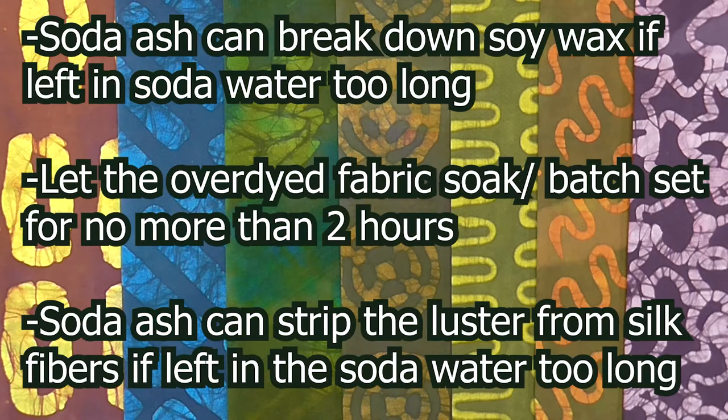Let your over-dyed fabric sit for 1-2 hours. Soda ash breaks down soy wax, so if you leave it in too long you'll negate your wax stamping, but feel free to experiment. If you're dyeing silk with soda ash, you can strip the luster of the fiber if you leave it in longer than a couple of hours. Once the 1-2 hours is up, you'll need to remove the wax.